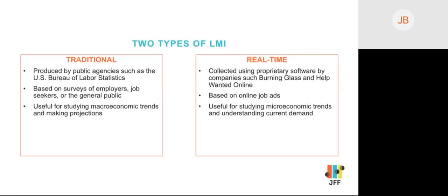There are two primary categories or types of labor market information: traditional data and real-time data. Traditional data is produced by public agencies such as the Bureau of Labor Statistics. It includes past trends and future projections on hundreds of standardized industries and occupations, and has been collected for decades based on either mandatory tax records or mandatory employer participation in surveys. This kind of information is generally more accurate and complete than real-time data, but not as timely.